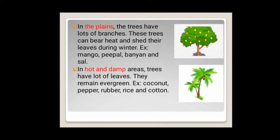In the plains, the trees have lots of branches. These trees can bear heat and shed their leaves during winter. Examples are mango, peepal, banyan and sal. In hot and damp areas, trees have a lot of leaves. They remain evergreen and do not shed their leaves in any season, so these plants are called evergreen plants.